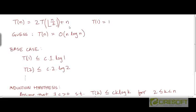Here is another example of a recurrence that we will solve using the substitution method. This is a simpler example relative to the one we have seen in the last several videos. We are given the recurrence T(n) = 2T(⌊n/2⌋) + n. Let's say this applies for n greater than 1, and T(1) = 1. This is the base case, or the boundary condition of the recurrence equation.